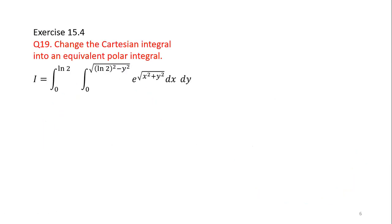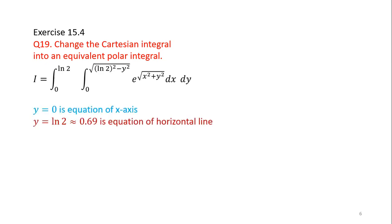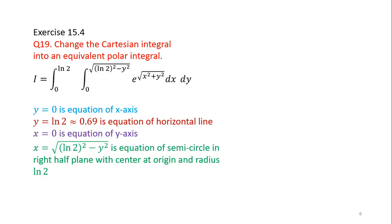We will now solve Question 19 from Thomas Calculus 12th edition, Exercise 15.4: convert the Cartesian integral into an equivalent polar integral. The limits of y are 0 to ln 2, so y = 0 is the x-axis and y = ln 2 (approximately 0.69) is a horizontal line. Also, x = 0 is the y-axis, and x = sqrt(ln 2 minus y squared) is the equation of a semicircle in the right half plane with center at origin and radius ln 2.